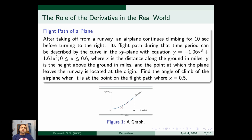First of all, let us see how we use the derivative, or the role of the derivative, in the real world. Consider the flight path of a plane. You know how a flight takes off from a runway. Suppose a flight takes off from a runway and continues climbing for 10 seconds before turning to the right. Its flight path during that time can be described by the curve in the xy-plane with the equation y = -1.066x³ + 1.61x², where 0 ≤ x ≤ 0.6, x is the distance along the ground in miles, y is the height above the ground in miles, and the point at which the plane leaves the runway is located at the origin.